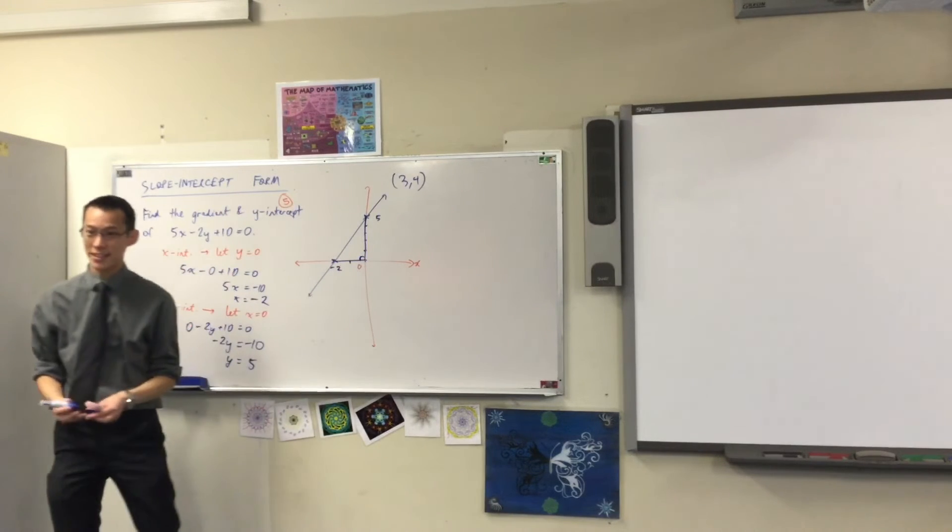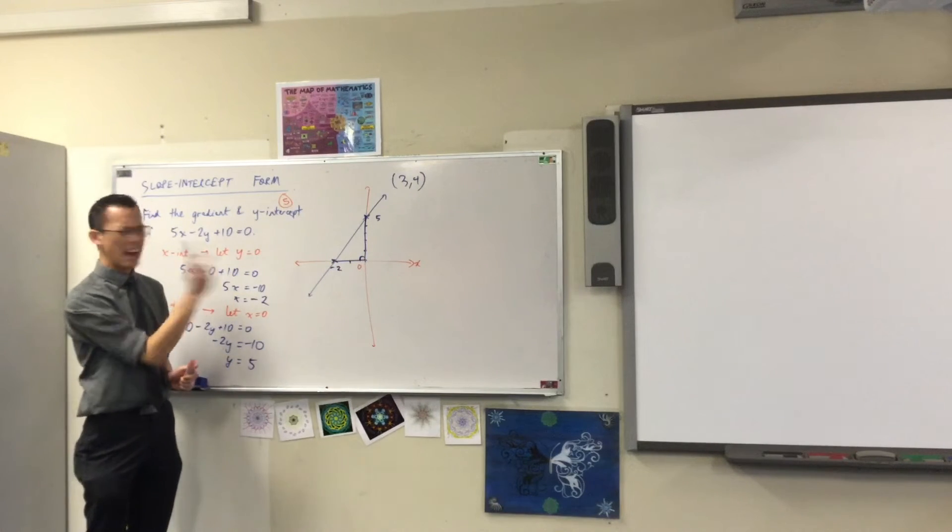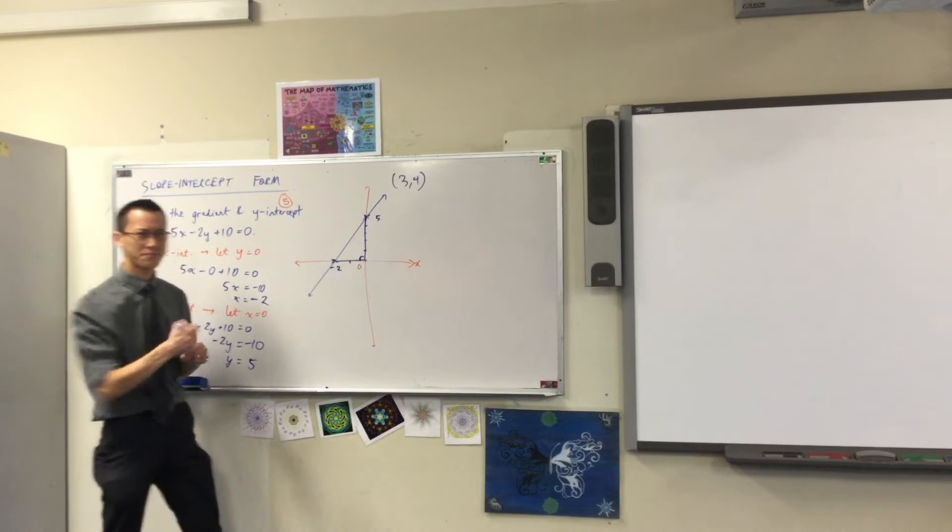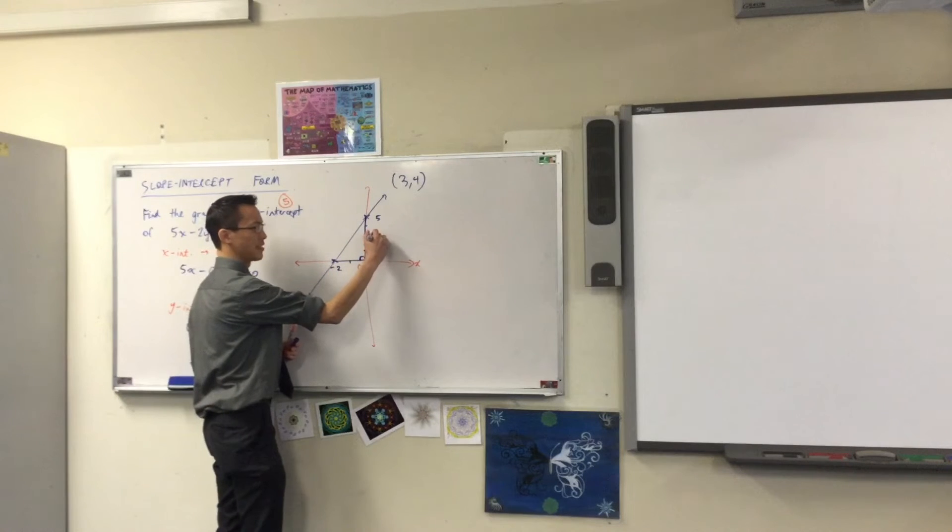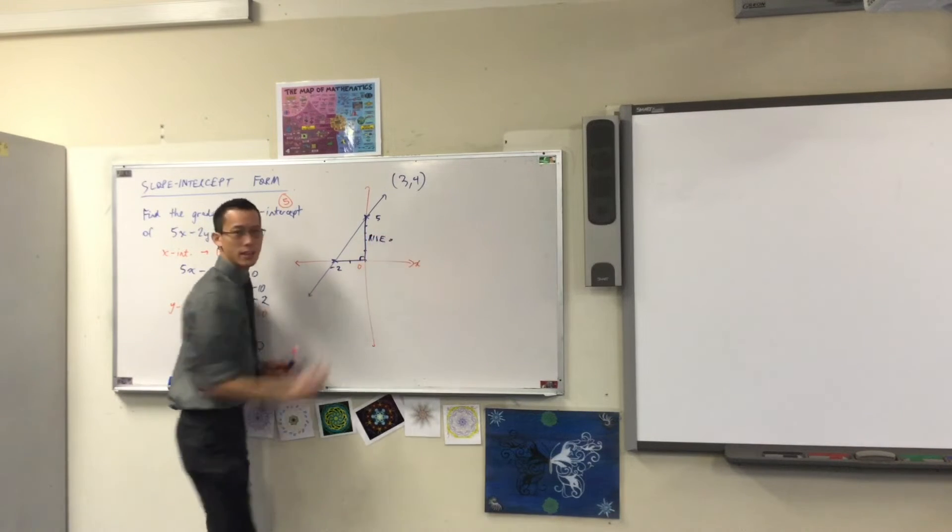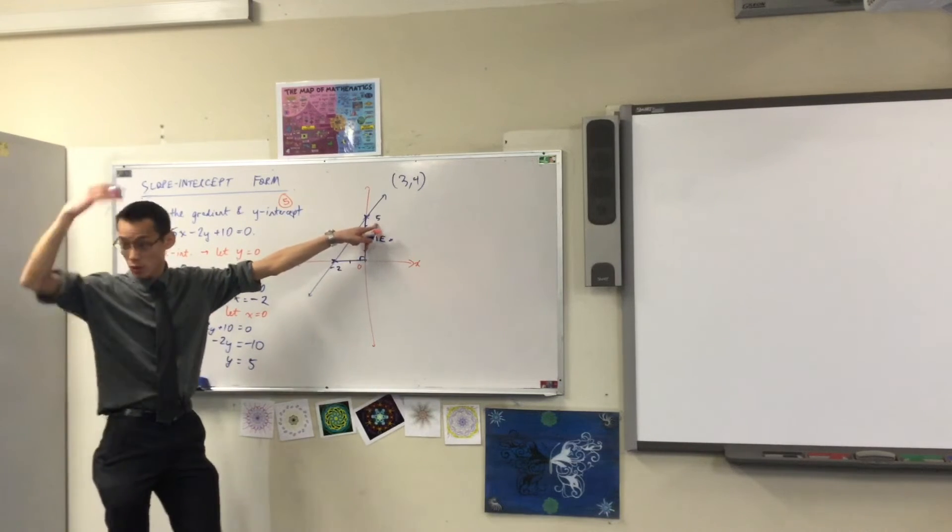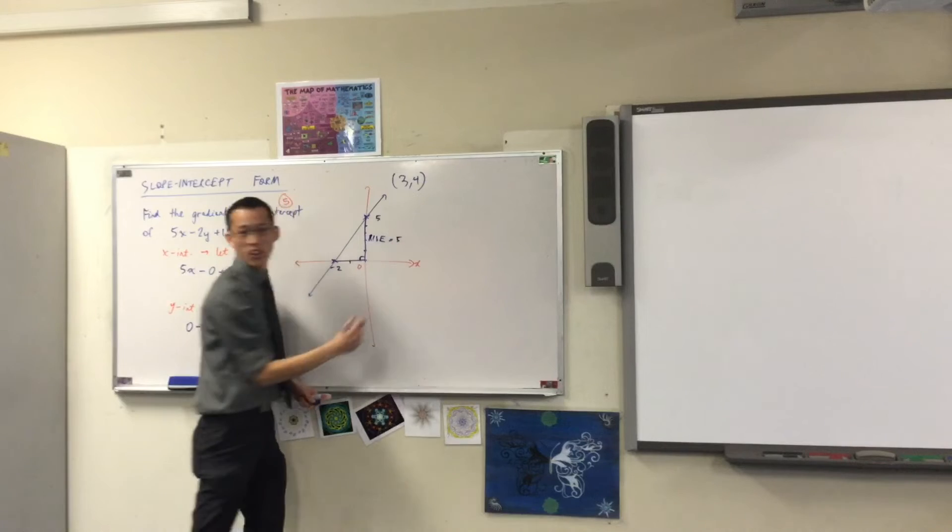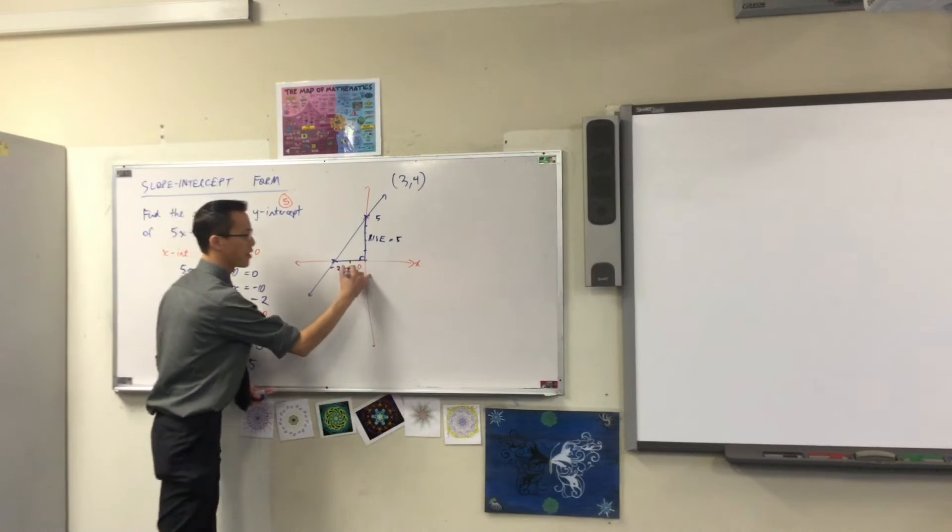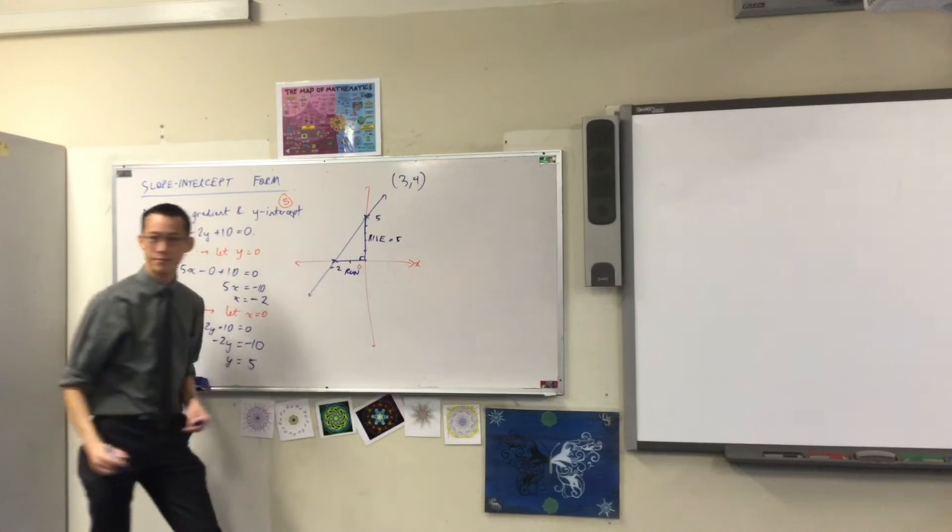The axis are always perpendicular. Right? So, how do I use this triangle to help me? This is rise over here, right? What's the length? 5. It's 5, because that's what the coordinate is. And I'm going up. Right? So, it's not negative or anything like that. What about the run? 1, 2, just 2, just 2.